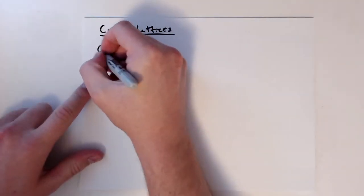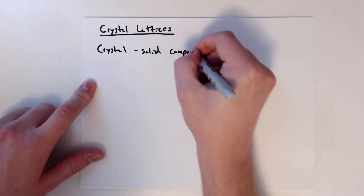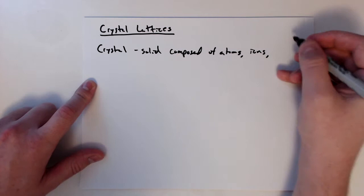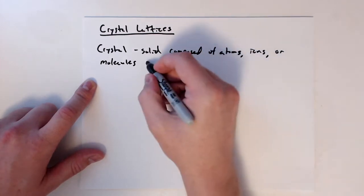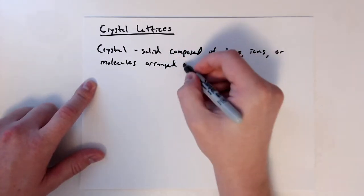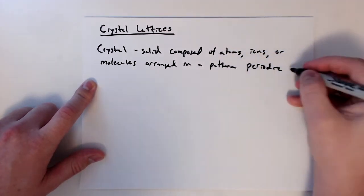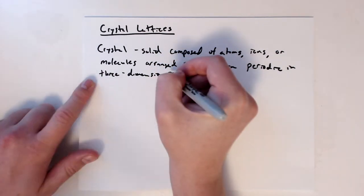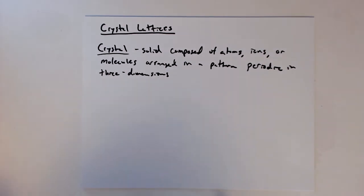When we talk about a crystal, we're talking about a solid composed of atoms, ions, or molecules. And they're arranged — and this is the key — in a pattern, and that pattern is periodic in three dimensions. So when we talk about crystals, we're talking about something that's a solid but also has a periodic pattern to its structure.